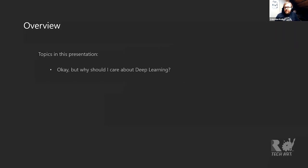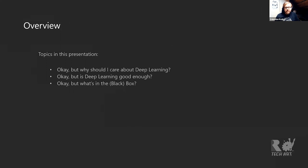Briefly, the topics in this presentation: we're going to go through why you should care about deep learning and what it can do for you in your pipelines, whether deep learning is good enough, and how it actually works. A lot of the time we treat deep learning as a bit of a black box — quite inscrutable, quite difficult to control. Hopefully we can work against some of those preconceptions, and towards the end we'll get into the more fun, meaty bits: how do I actually use this, what do I practically do?